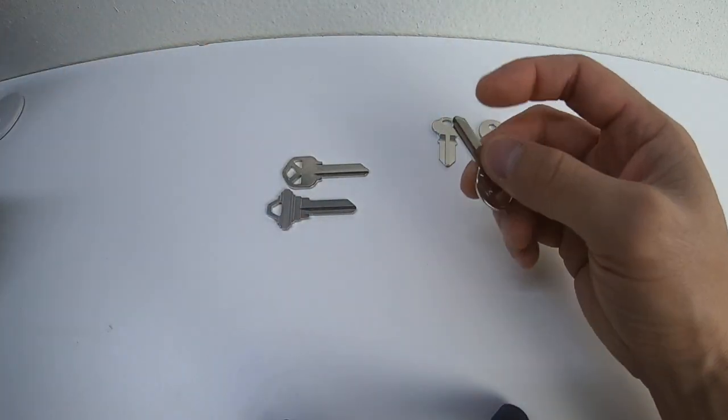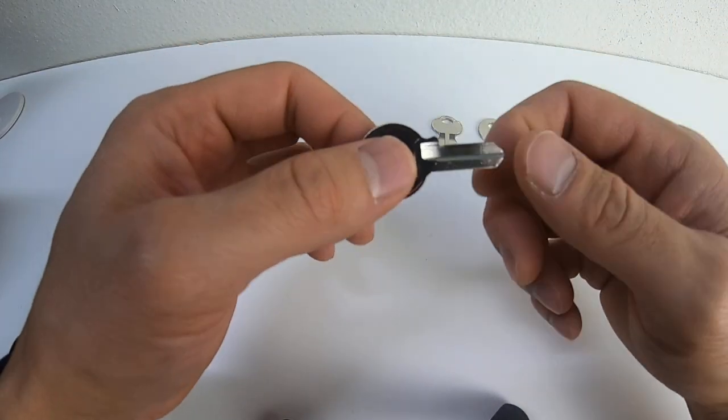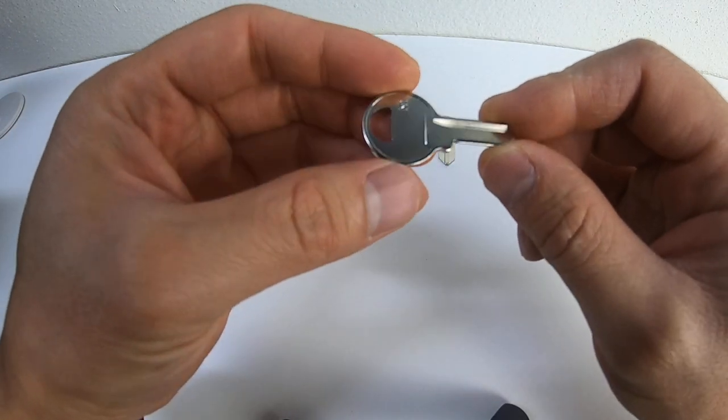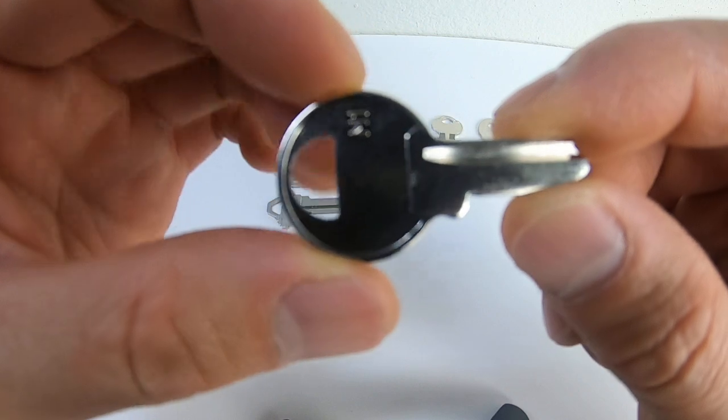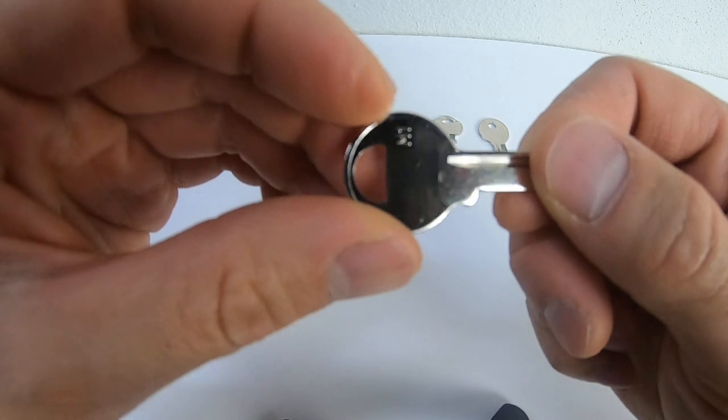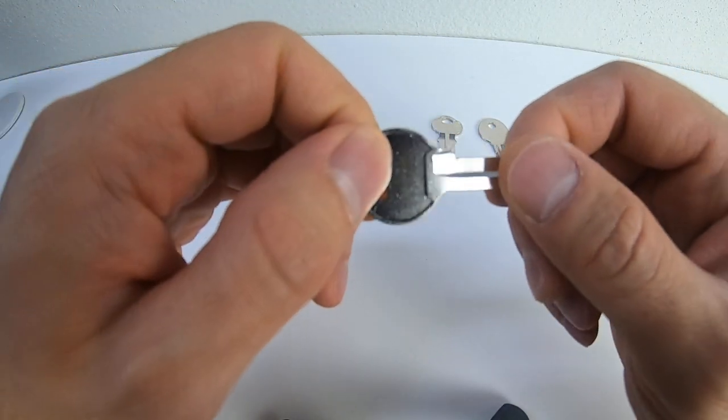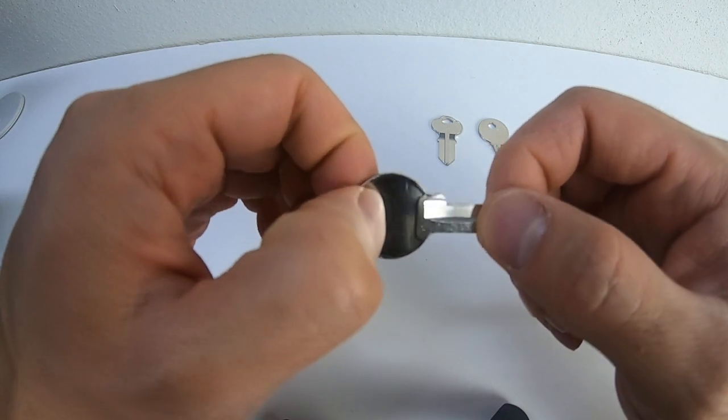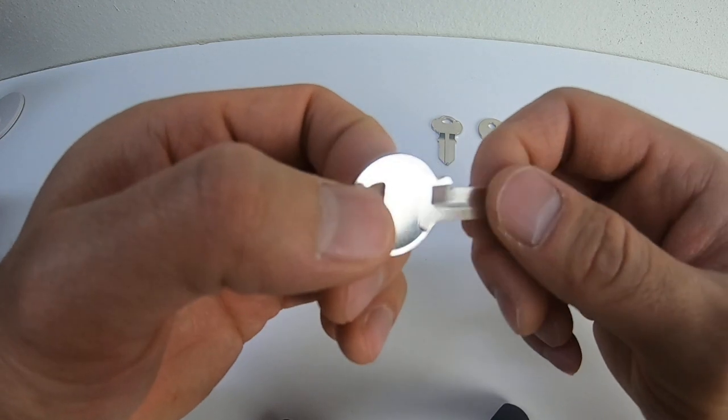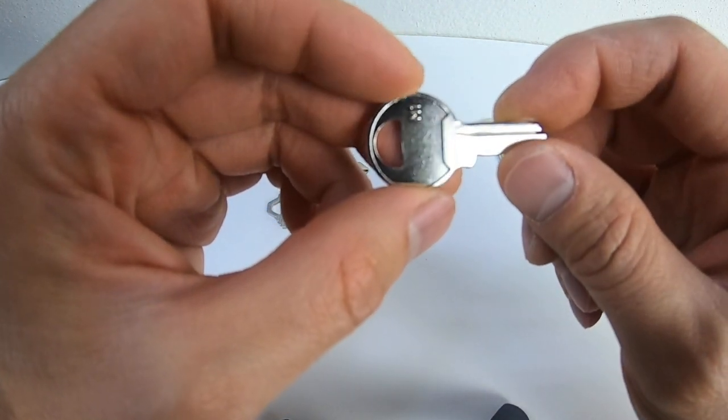When we get into padlocks, so people have gym locks and different types of locks, this is probably one of the most popular ones. It's called an M1. This is also a single-sided edge cut key. If you notice, it is smaller. It's called M1. It's basically one of the keys from a brand called Master, Master Lock. They use this key.